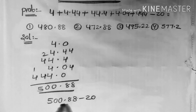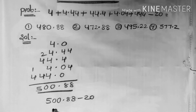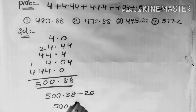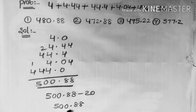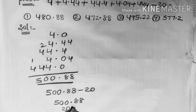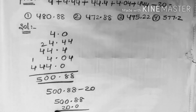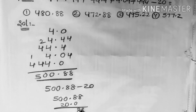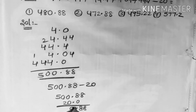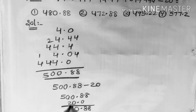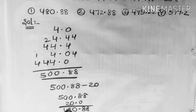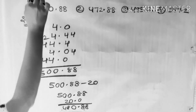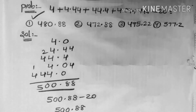We subtract 20 from 500.88. That is 500.88 minus 20.0, which gives 480.88. That is the first option.